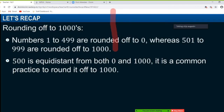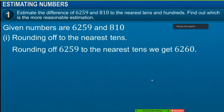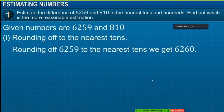Rounding off 6,259 to the nearest tens, we get 6,260, as it is closer to 6,260. Rounding off 810 to the nearest tens, we get 810.